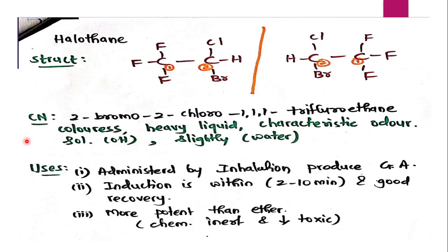Coming towards the properties: Halothane is a colorless, heavy liquid and it has a characteristic pleasant odour. Because of this pleasant odour, it is used in children by the inhalation route for anaesthetisation. Coming towards solubility, it is soluble in alcohol, miscible in chloroform as well as ether, and slightly soluble in water.